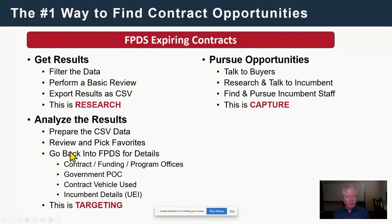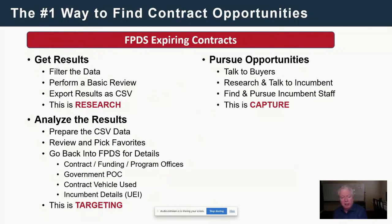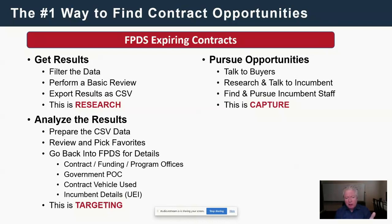Now I'm going back into FPDS to find the contracting office, funding office, and program office for my favorite opportunities. The program office is the person who will use SharePoint. The funding office — which may or may not be the program office — provides the money for the requirement. The contracting office runs the RFP process. When I do capture, I always need to know: who is the contracting officer, what is the funding office, what is the program office. I also want to find the government point of contact and the incumbent.